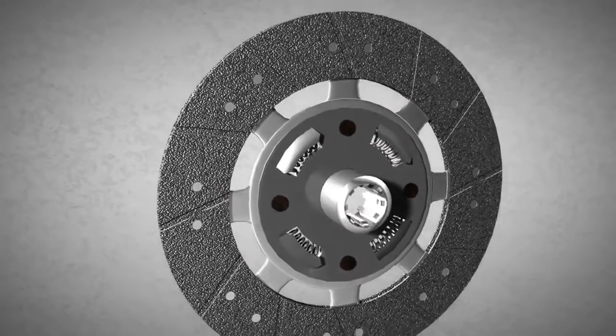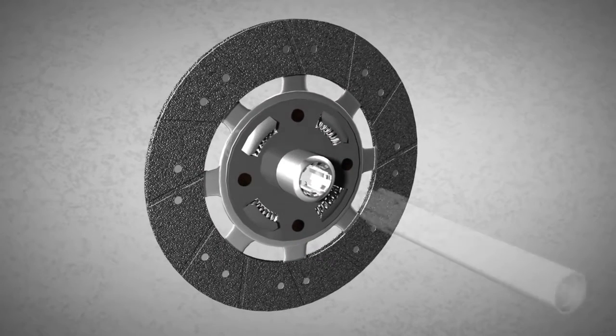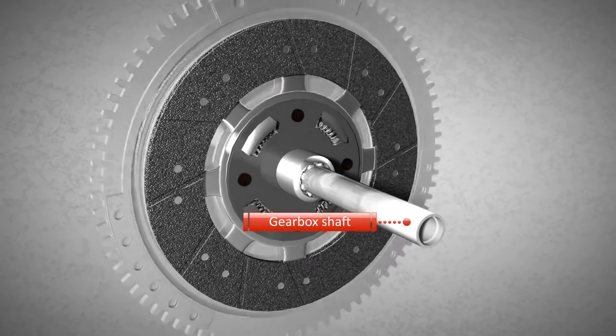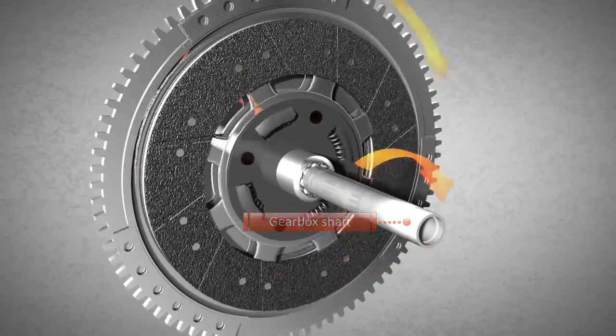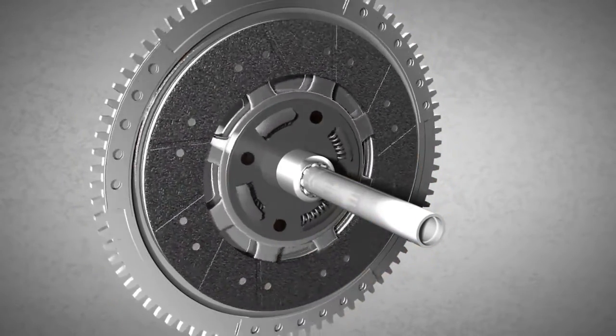The clutch disc is connected to the gearbox through the gearbox shaft. Consequently, the wheels of the vehicle only rotate when the flywheel is in contact with the clutch disc.